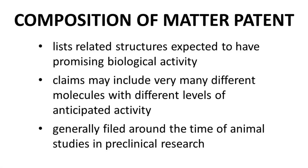The first patent type we'll cover is the composition of matter patent. A composition of matter patent lists the types of molecules that are being researched and expected to have promising biological activity. The number of molecules can be huge, even in the millions. The listed molecules form the claims of the patent, and the text of the patent must provide some indication of which molecules are likely better than others. This is a key part of the disclosure of the patent.